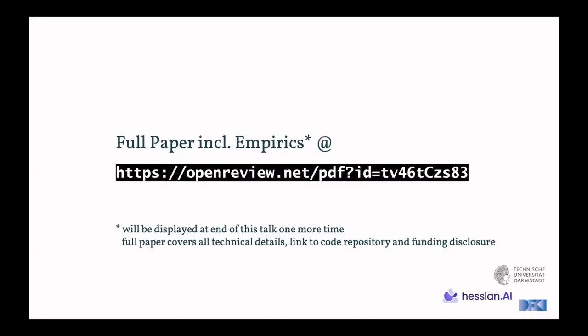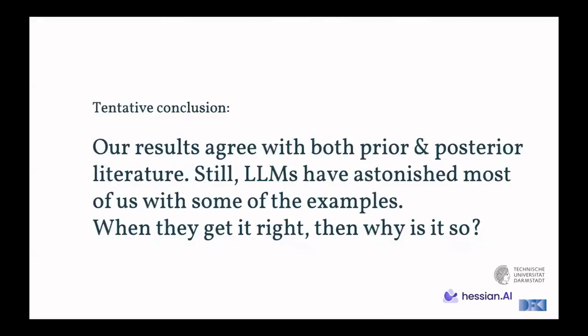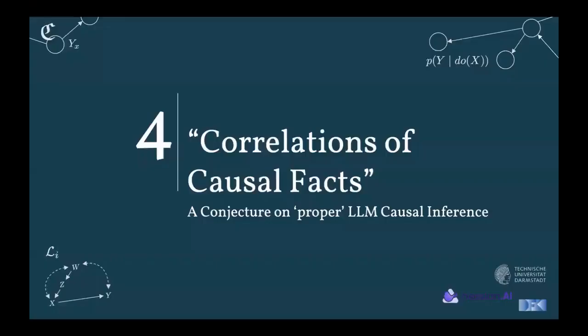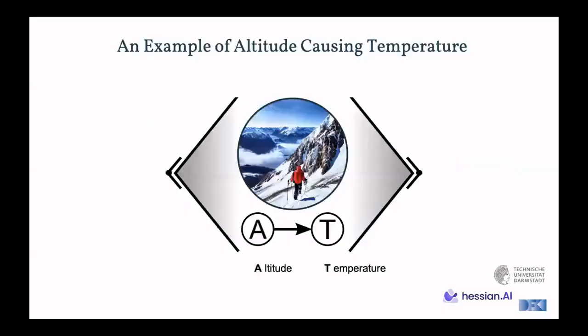For all of the empirics, we point to the full paper. And this link is going to be highlighted once more at the end of the talk. Tentative conclusion for now, our results seem to agree with both the prior and the literature that is on the horizon. Still, LLMs have these astonishing examples. So when they get it right, why is it so? And this is now what we are going to try to tackle with our formalization of an overarching hypothesis that we conjecture to be true. We call it the correlations of causal facts.